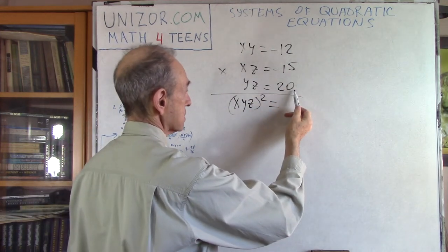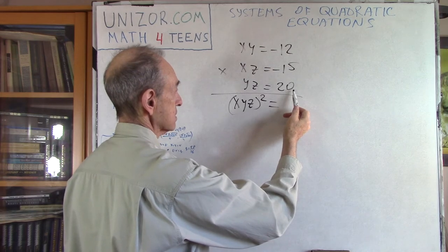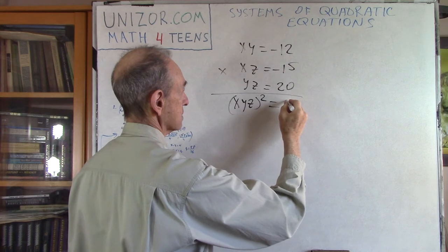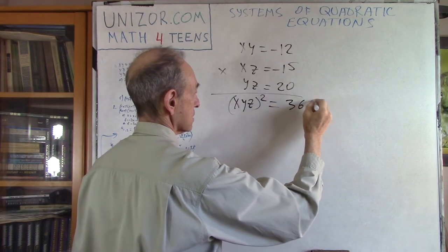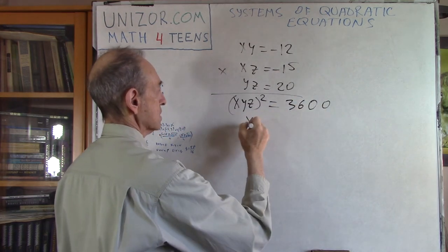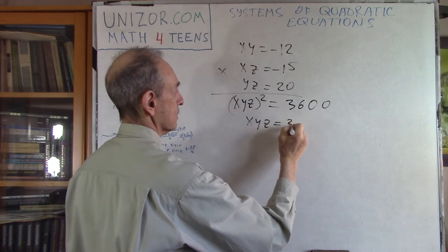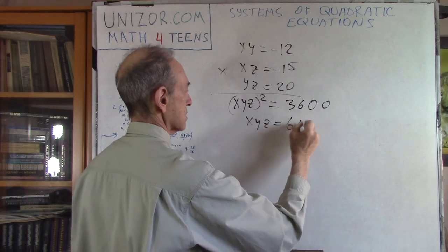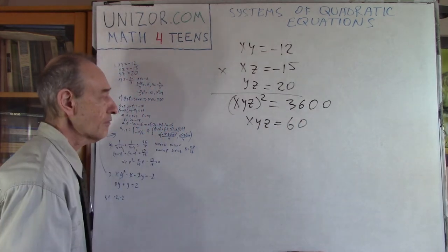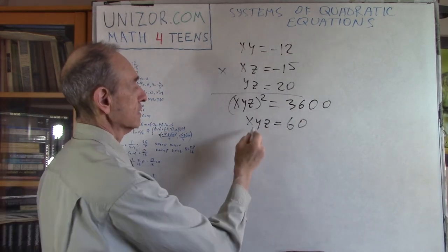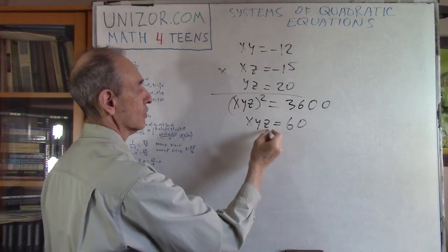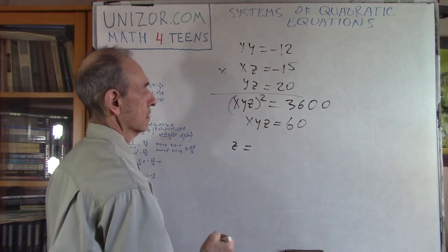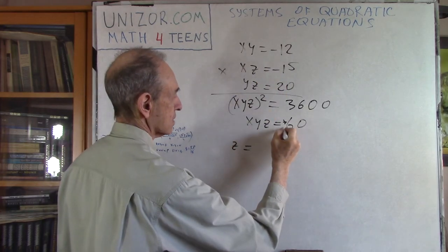Equals 15 times 20 is minus 300 times 12, that's minus 3600, which is XYZ is equal to plus or minus 60. Now, if I will divide this by this, I will have only Z left, right? So Z is equal to 6 divided by... By the way, it's plus or minus. So let's consider a plus.